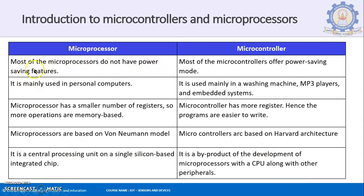Most microprocessors do not have power saving features — they work depending on the time when a task is provided and then perform that task. Most microcontrollers, however, have a power saving mode, because you can program them. You are able to control when to be on, when to be idle — all these can be programmed. When a particular condition occurs, it will turn on a specific device. The microprocessor is mainly used in computers, whereas the microcontroller is mainly used in washing machines, MP3 players, embedded systems, and similar applications around you.